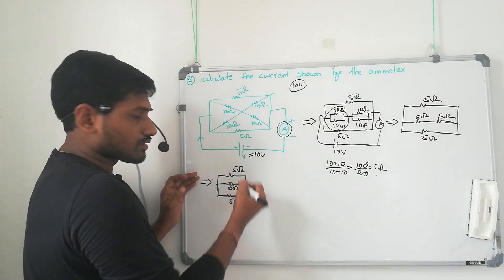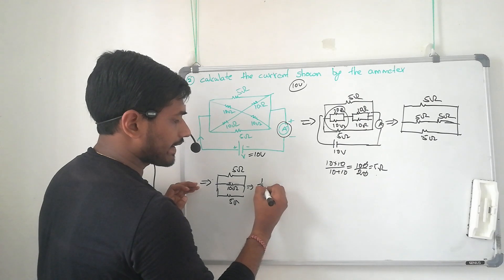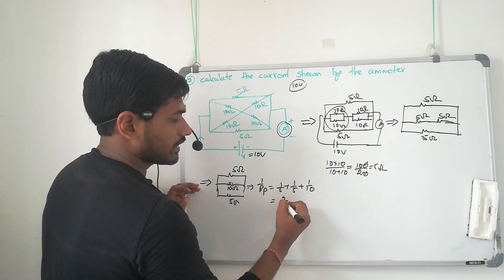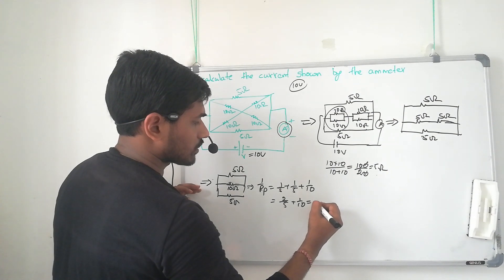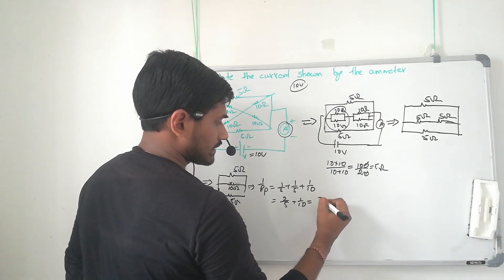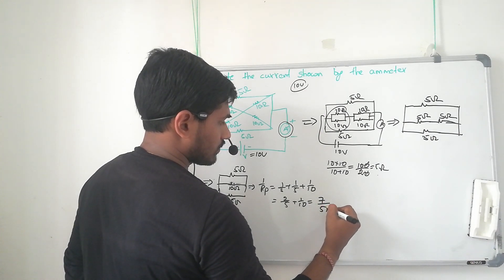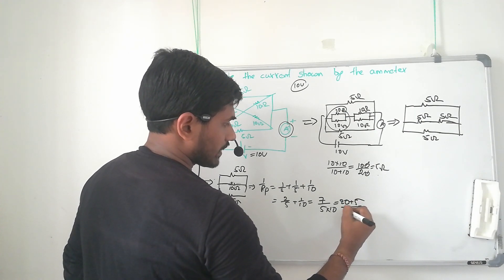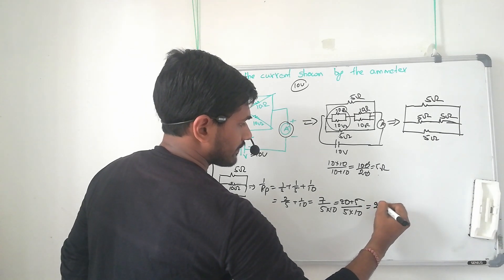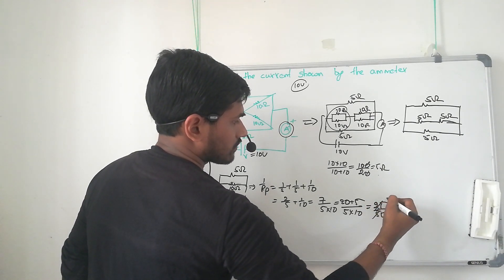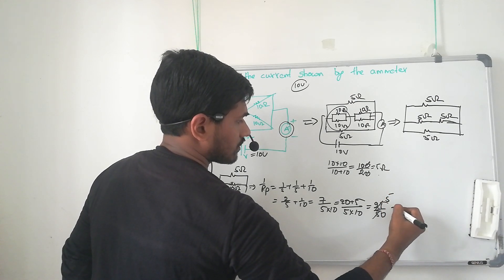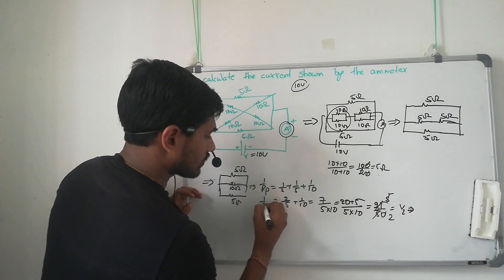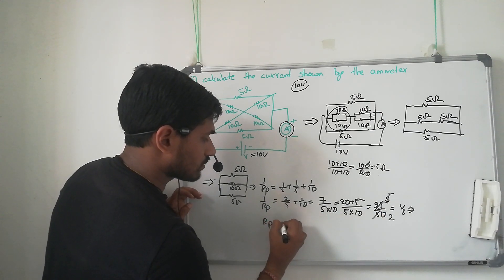These three resistors will be in parallel, so we calculate the parallel value: 1/R_parallel = 1/5 + 1/5 + 1/10, which equals 2/5 + 1/10. Taking LCM: (4 + 2 + 1)/10 — simplifying gives 25 divided by 50, which reduces to 1/2. So R_parallel equals 2 ohm.